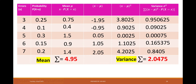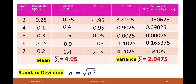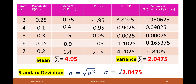To find the standard deviation, get the square root of the variance, 2.0475, which equals approximately 1.43. Therefore, the mean is 4.95, the variance is 2.0475, and the standard deviation is 1.43 — the same answer as the first method. You can use either the long method or this table approach.